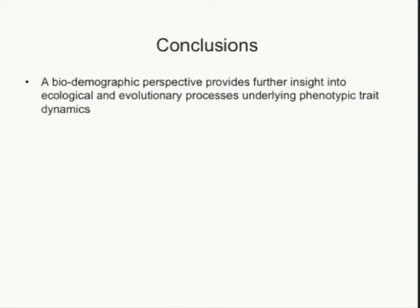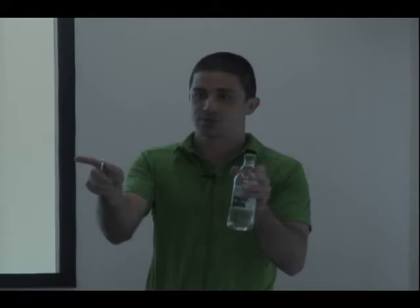The two main conclusions: in terms of trait dynamics, a bio-demographic perspective allows us to understand ecological versus evolutionary processes underlying a trait change. In terms of population dynamics, as conservation biologists we are interested in species' response to environmental change. We have very good understanding at the organismal level and a good retrospective understanding of species distributions. But we have very little information on how populations respond to environmental change. And coincidentally, this is the level where we can have the most impact — most management plans are at the population level. So using a trait-demography approach really allows us to better understand species' response to environmental change.